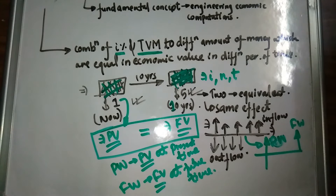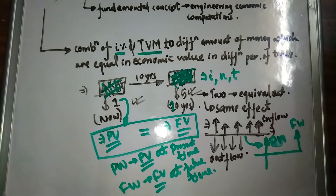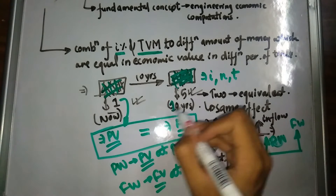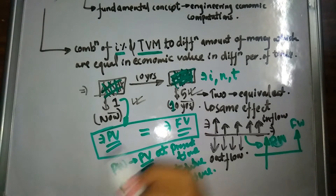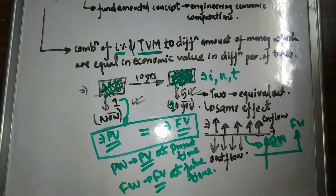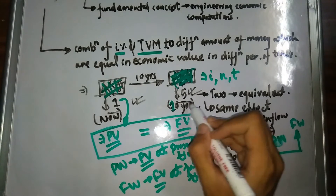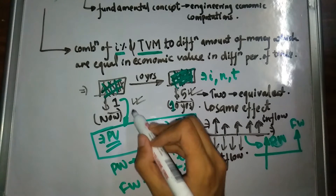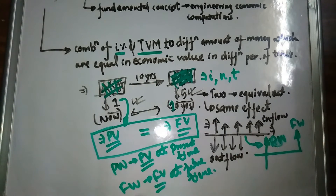Present worth simply means the present value at the current time — it is the summation of all cash inflows and outflows brought to our present time. Future worth means the future value — the summation of all cash flows calculated at a future time. Economic equivalence means certain sums of money that are economically equivalent but not in the same amount at the same point in time.